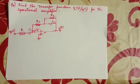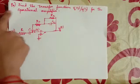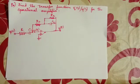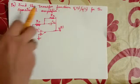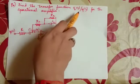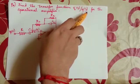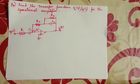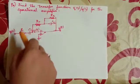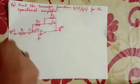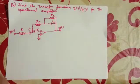Hello friends, welcome to my channel. This is another problem in which we have to find the transfer function V0(s) divided by VI(s) for the operational amplifier. This is the circuit for this problem.